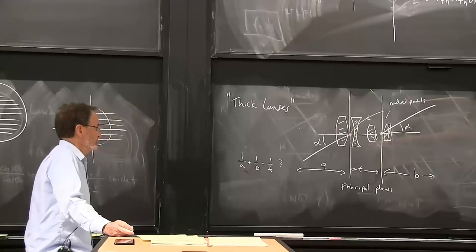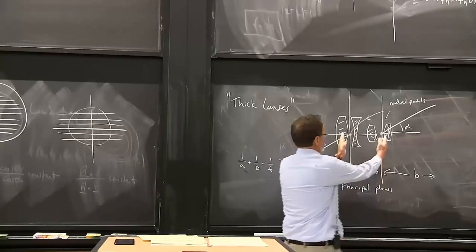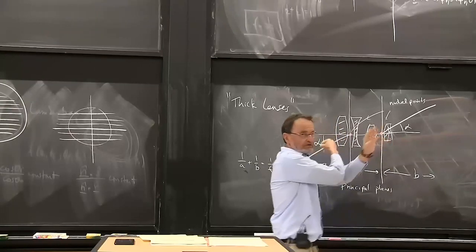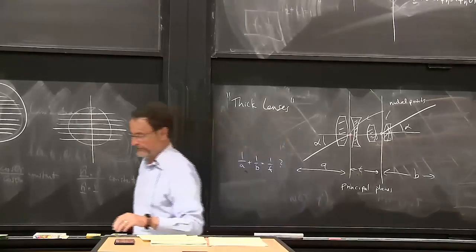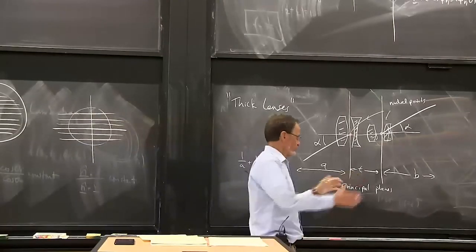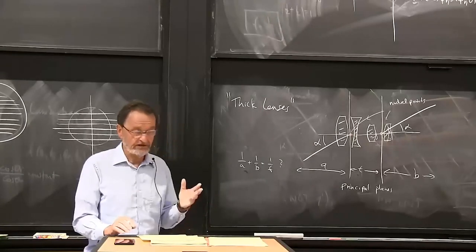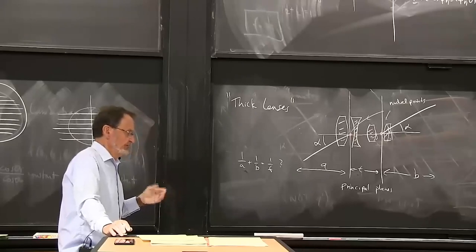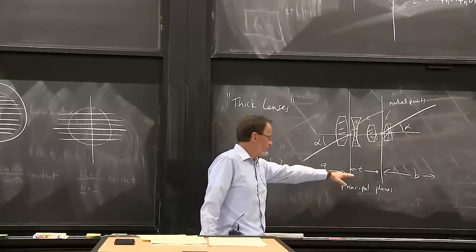Here's a neat trick: t doesn't have to be positive. The front nodal point can actually be behind the rear nodal point. If you make this large, you can make a short telephoto lens. Normally a telephoto lens has a long focal length, small field of view, and needs a long tube. But if you make t negative, you can compress that. Typically if you buy a telephoto lens from Nikon or Canon and look at its focal length in millimeters, and then actually measure the lens, you'll find that in many cases the lens is shorter than the focal length. That's one trick to play with this.